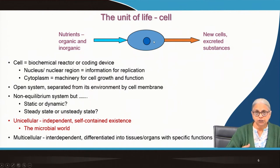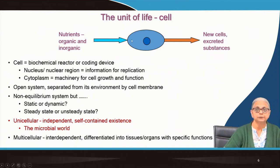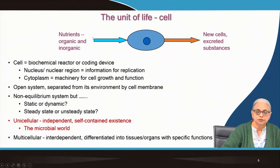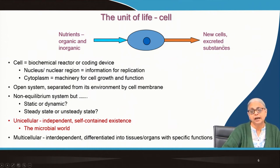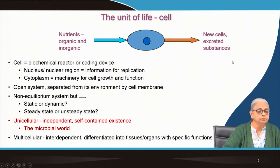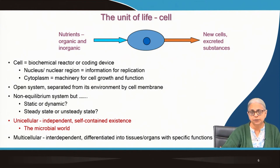The cell will utilize nutrients for creating new biomass, enabling it to replicate. One single cell replicates to become two, two become four, four become eight. In the process of reproduction and growth, new cells are created and some waste is generated. These excreted substances — fragments of biopolymers, macromolecules, or DNA — are excreted back into the environment. This is a simplistic understanding of how a microbial cell survives in the environment.